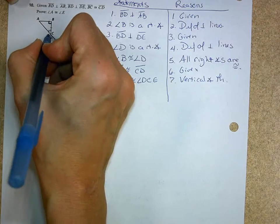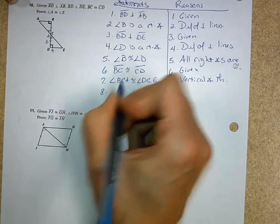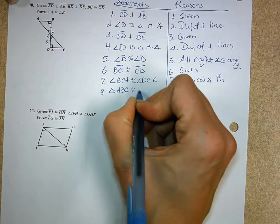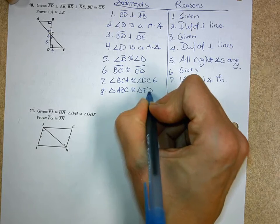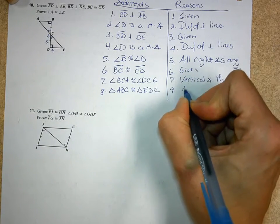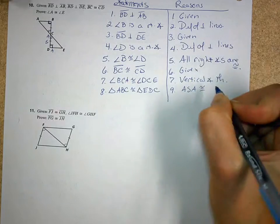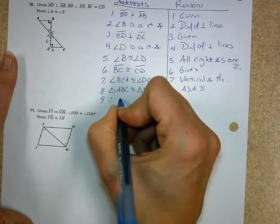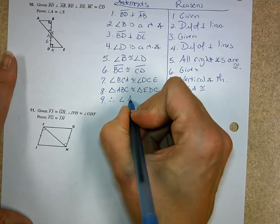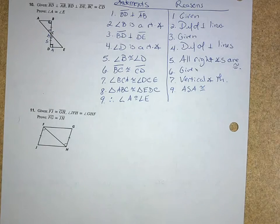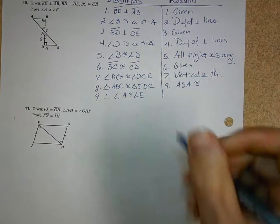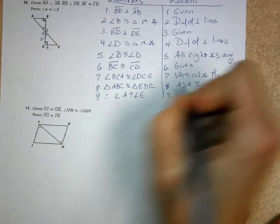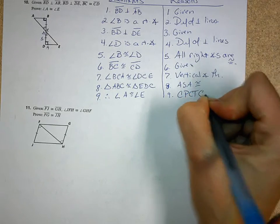Because what does the vertical angle theorem tell us? If two angles are vertical, then they are congruent. Now, I have, look here, angle, side, angle. So I know the triangles are congruent. So I go triangle ABC is congruent to triangle EDC by angle, side, angle, congruence. Now that I know those two triangles are congruent, I can then state that angle A is congruent to angle E. Now, I'm going to tell you there was a faster way of doing this one. If two angles of one triangle are congruent to two angles of another triangle, the third angles are what? Congruent. You could have done it that way. All right. And why are these two congruent? Because corresponding parts of congruent triangles are congruent.